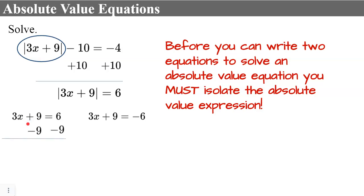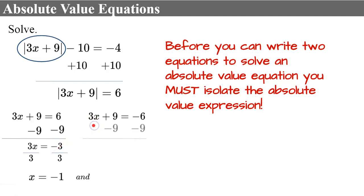Let's solve our two equations. For the first: subtract 9 from each side, giving 3x equals negative 3; divide both sides by 3, and x equals negative 1. For the second solution: subtract 9 from each side, giving 3x equals negative 15; divide both sides by 3, and x equals negative 5. So our solutions are negative 1 and negative 5.